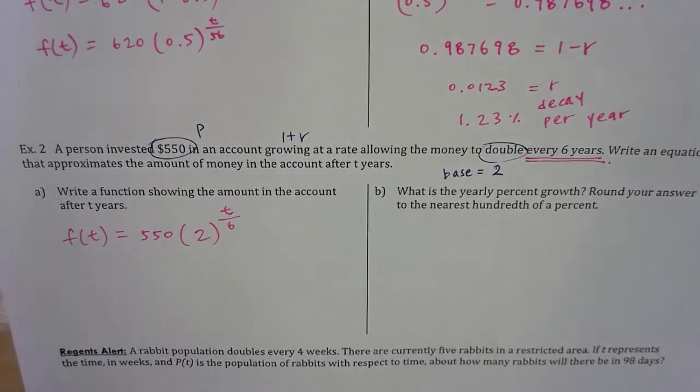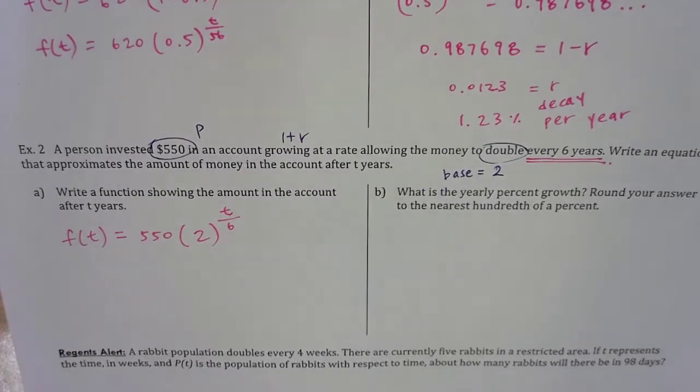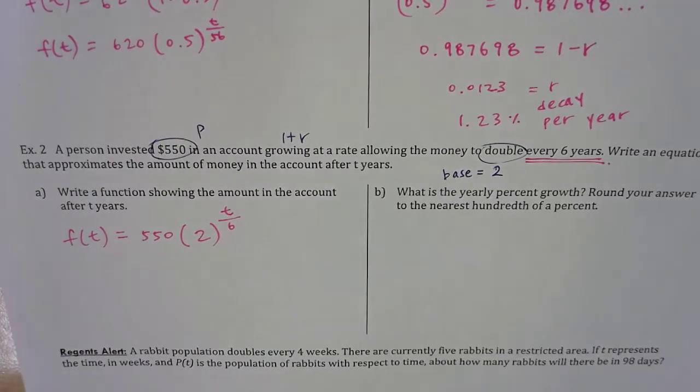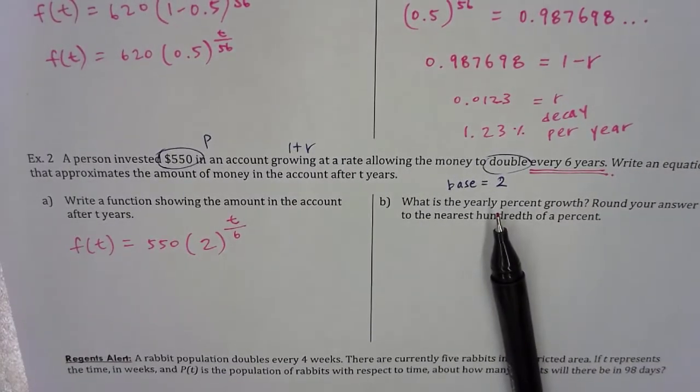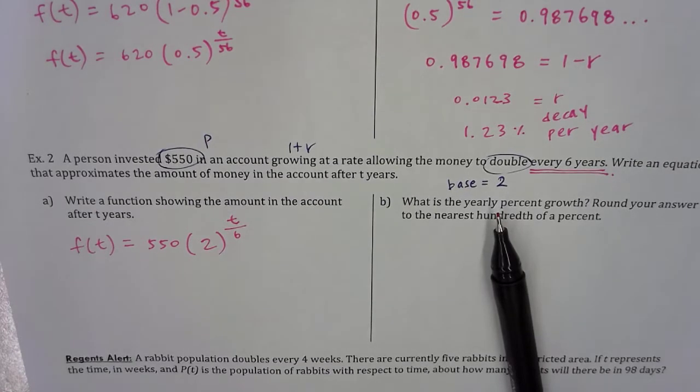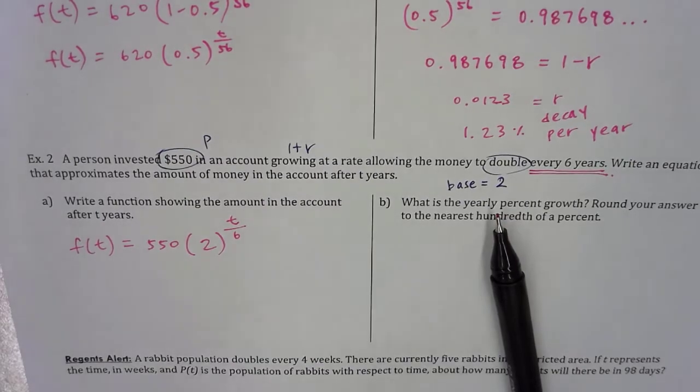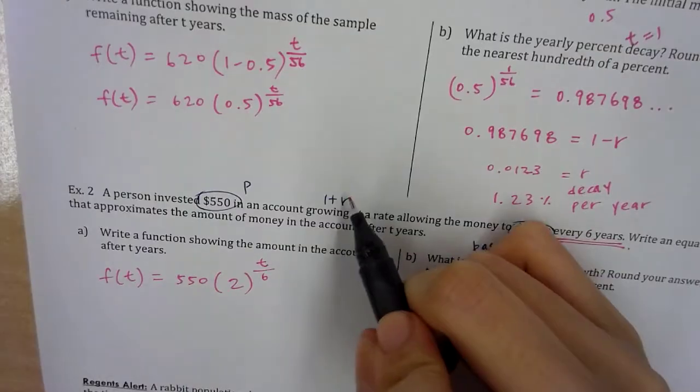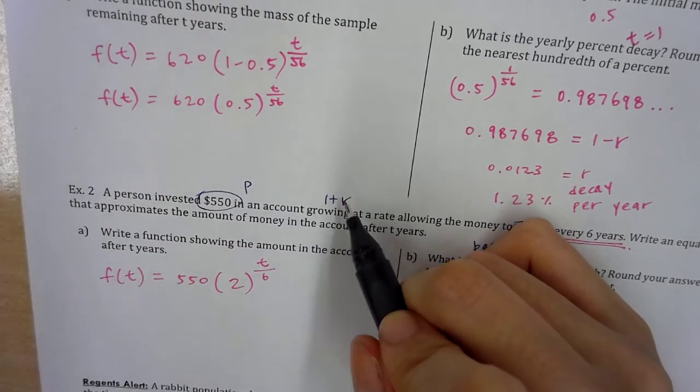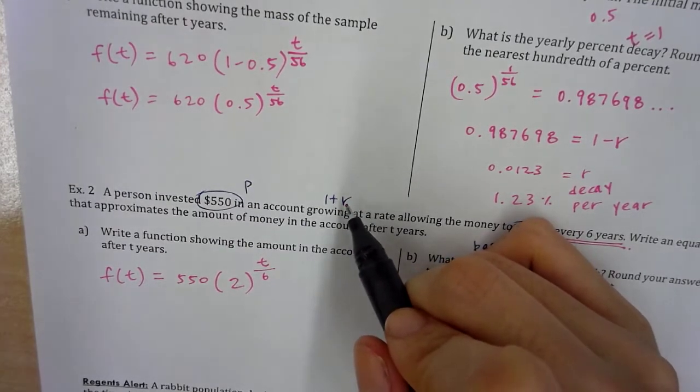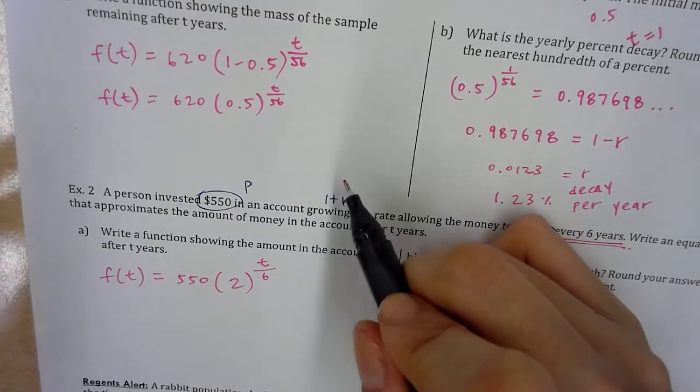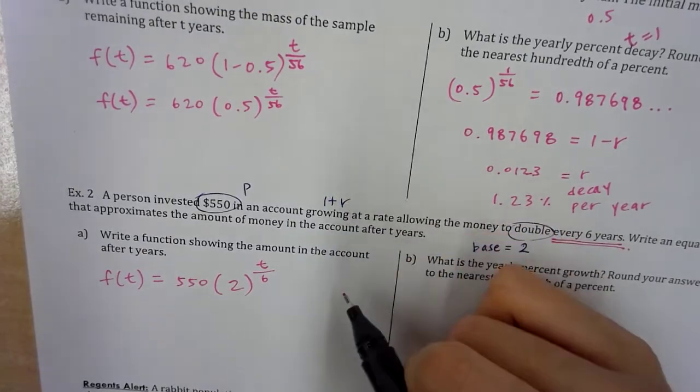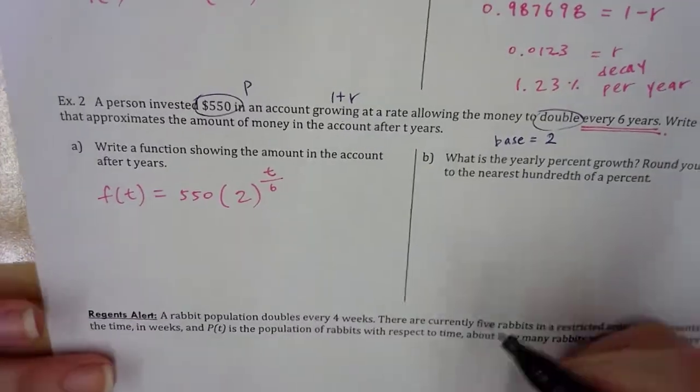f(t) equals initial value, $550. Base itself is two, raised to t over 6, because the key phrase was every six years. Here's a quick challenge problem: if doubling is multiplying by two, what is the rate or percentage increase when something doubles? 100%. So technically, when I double something, the r value is one. If I have five dollars and I double that, ten dollars, you had the initial five and you added 100% of that five again.